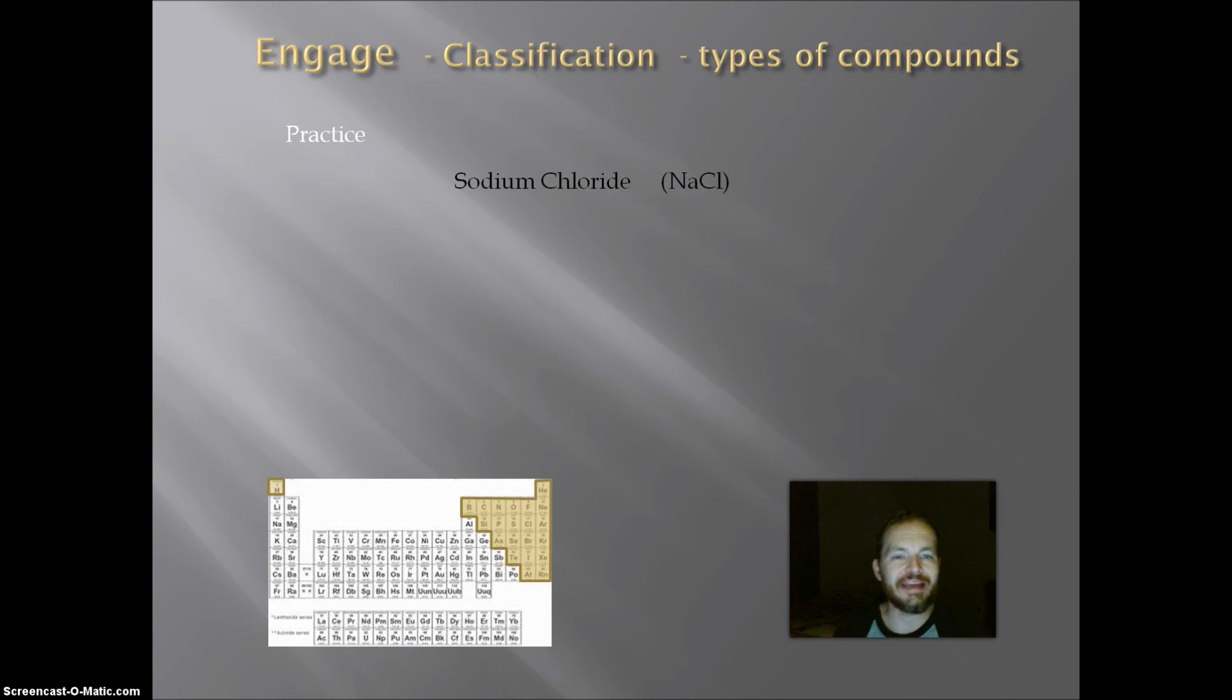Next practice, sodium chloride, NaCl. Well, the name ends in ide, so that means it could be ionic or covalent. So we need to look at the chemicals. And I see that sodium is a metal and chlorine is a nonmetal. So it contains a metal and a nonmetal. And if it contains both a metal and a nonmetal, it is ionic.